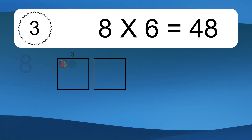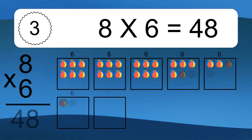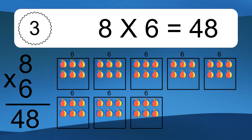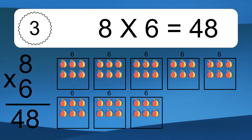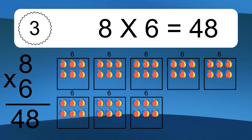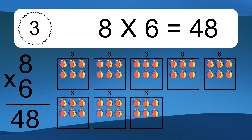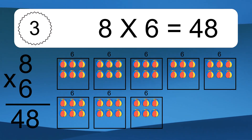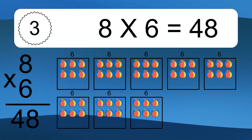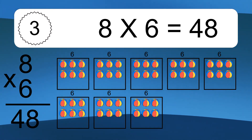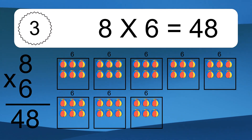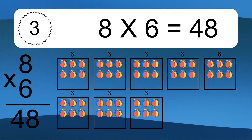8 times 6 equals what? 8 times 6 equals 48. We have 8 boxes, and each box has 6 colorful balls inside. If you count all the balls in all the boxes together, you will have 8 times 6 balls. This equals 48 balls.